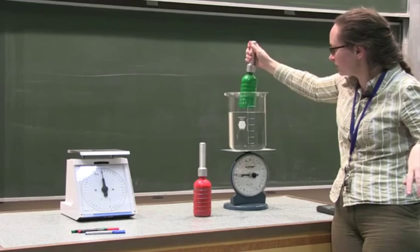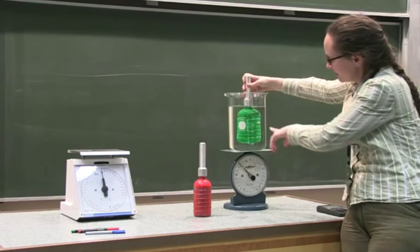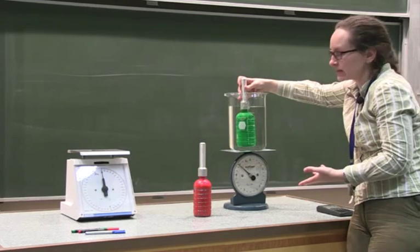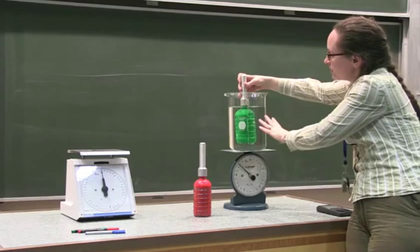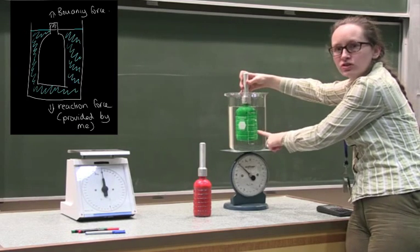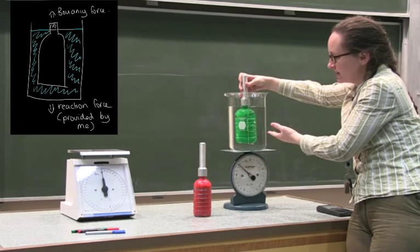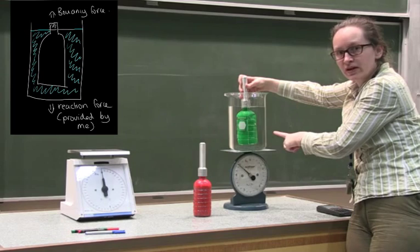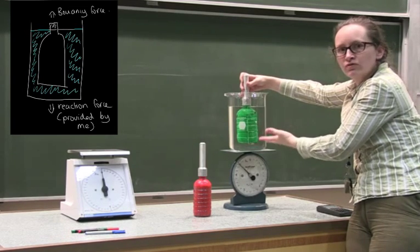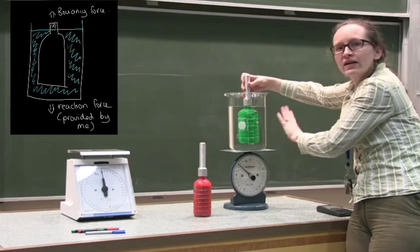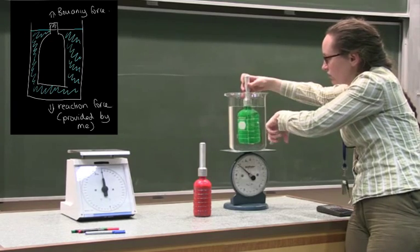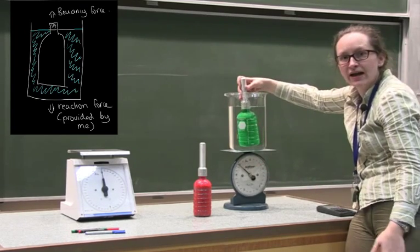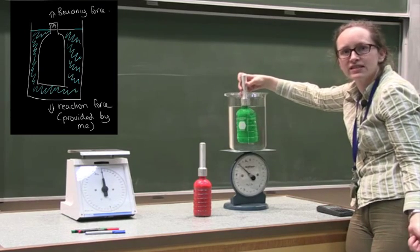When we submerge a bottle, the volume increases by 600 millilitres, but the mass on the scale also goes up by 600 grams. This is because of a reaction force. The water provides a buoyancy force to the bottle. The buoyancy force provided to the bottle is equal to rho times V times g, and is proportional to the volume. To provide that buoyancy force upwards on the bottle, there's an associated force of the bottle pushing downwards on the scale. So the scale reads an extra 600 grams, equal to the mass of the water displaced by the bottle.